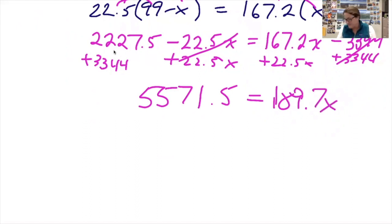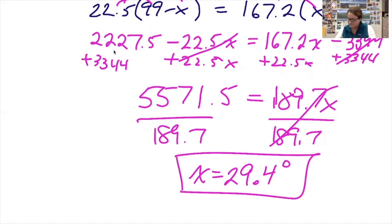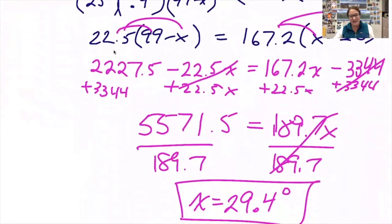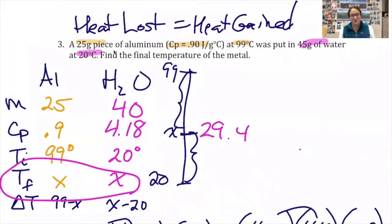And I get x to be 29.4. This is my final temperature because I defined x as my final temperature. So I don't need to do anything with that answer. But I do check to see that makes sense. 29.4 is indeed between 99 and 20 degrees.